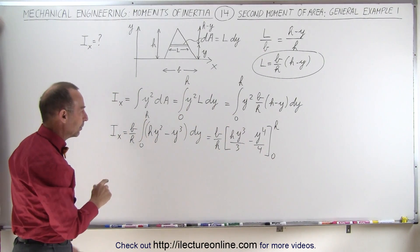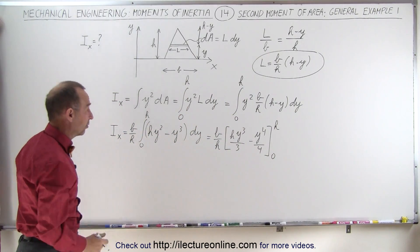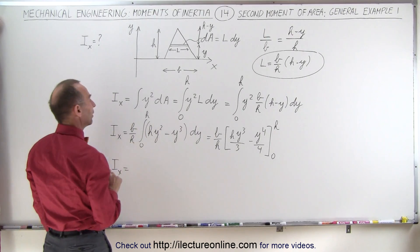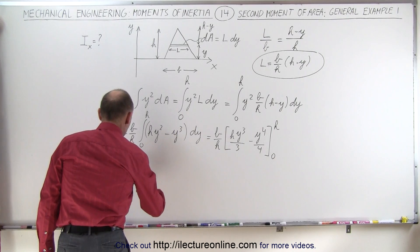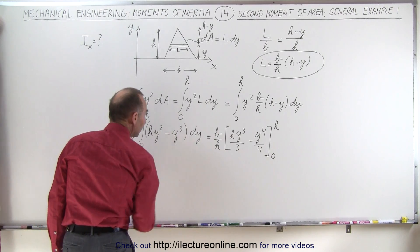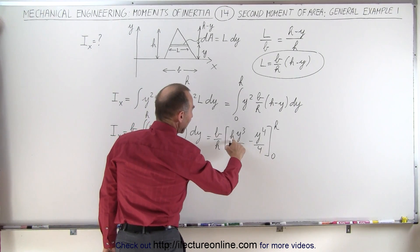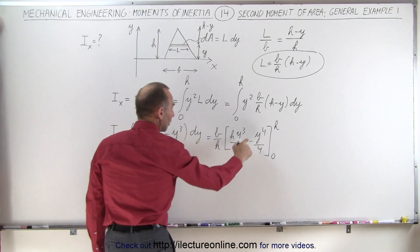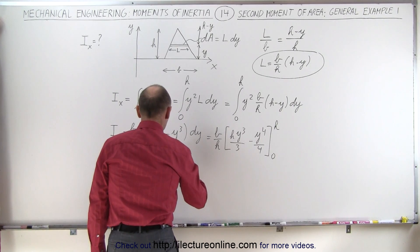Now all we have to do is plug in our upper limit, because if we plug in the lower limit, we get zeros, so the second moment of area with respect to the x-axis is b over h times. When you plug in the upper limit, you get h to the 4th divided by 3 minus h to the 4th divided by 4.